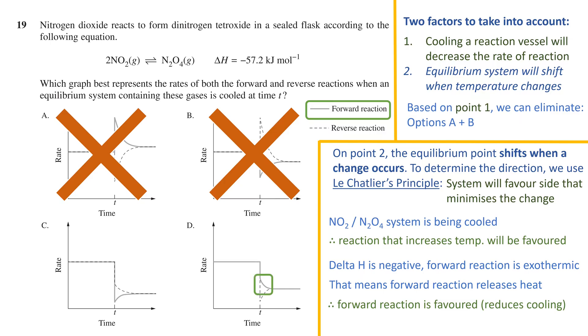If we look at option D, this is exactly what we are after. At time t, the rate of the forward reaction is higher than the rate of the reverse reaction. That clear preference for the forward reaction means that option D is the answer.